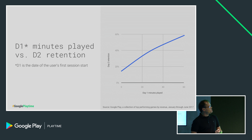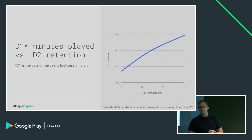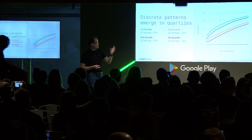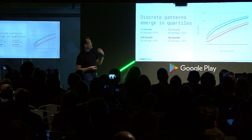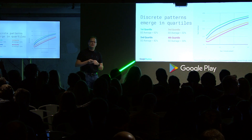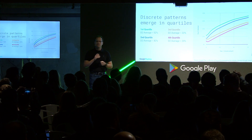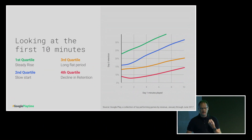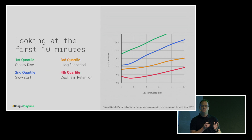The curve starts off at maybe 18% and steadily trends upwards with each successive minute played. This makes sense — there's a reasonable assumption that the more people play on the first day, the more likely they are to return, since the more they play, the more likely they are to be having fun. Where this data gets interesting is when we take those top couple hundred games and break them out into quartiles based on their day two retention. We can actually see that each of these quartiles exhibits largely the same pattern after the first 10 minutes — they all curve upwards and to the right. But it's in the first 10 minutes where the most interesting stuff starts to emerge.